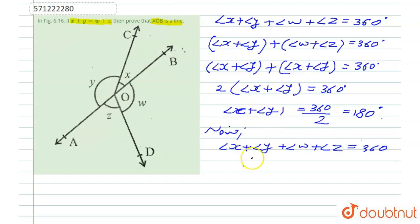And we know that angle x plus y is equal to 180 degrees, so in place of this we can write 180 plus angle w plus angle z is equal to 360 degrees. So this implies angle w plus angle z is equal to 360 minus 180, which is equal to 180 degrees.